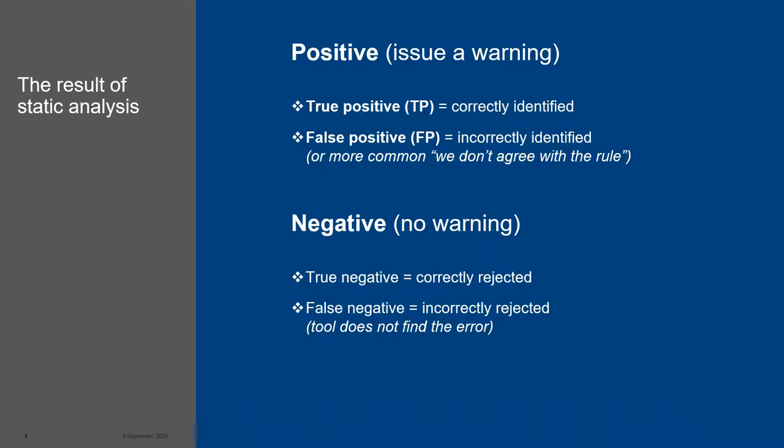So what kind of result do you get? You get an indication. You probably get some true positives, which are correctly identified bugs. But all programs also point out false positives — where something is identified but may not actually be wrong. You can also have a true negative, meaning there are no errors, and there can be false negatives where the tool doesn't find the error at all. These are the four verdicts you can get from static analysis.